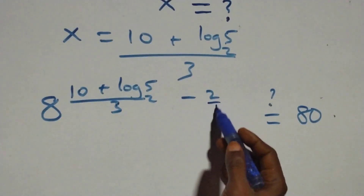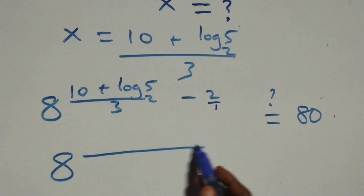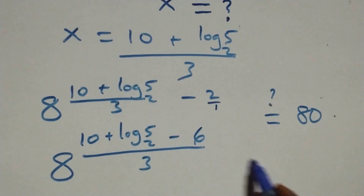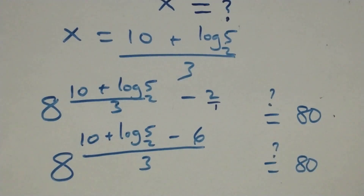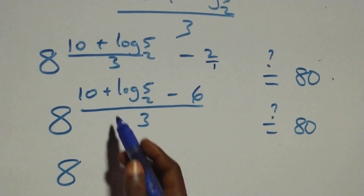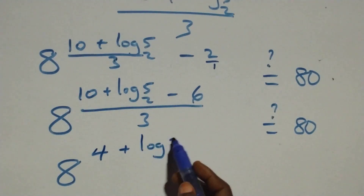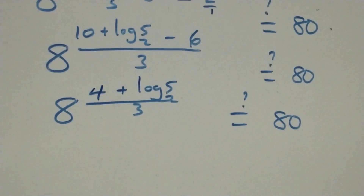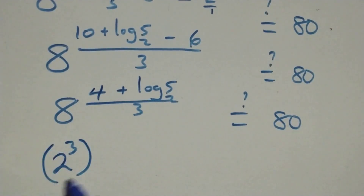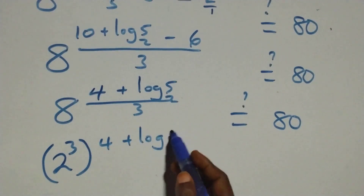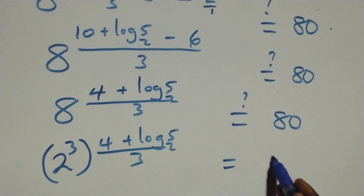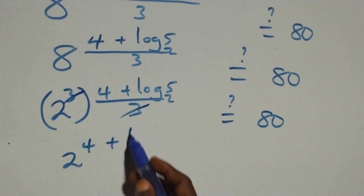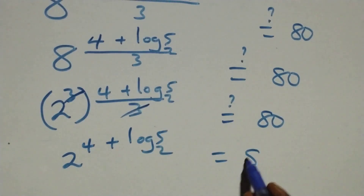We have 2 over 1, and bringing the exponent together: 8 raised to power [(10 + log₂5) minus 6] over 3, which simplifies to 8 raised to power (4 plus log₂5) over 3. We then write 8 as 2 cubed: that gives 2 raised to power (4 plus log₂5), and we check whether this equals 80.